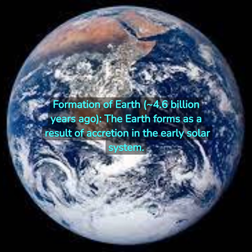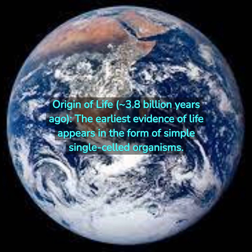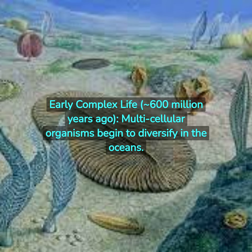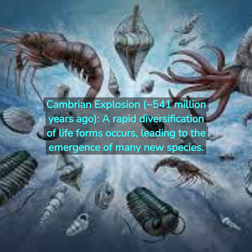Formation of Earth: 4.6 billion years ago, the Earth forms as a result of accretion in the early solar system. Origin of Life: 3.8 billion years ago, the earliest evidence of life appears in the form of simple single-celled organisms. Emergence of Photosynthesis: 3.5 billion years ago, photosynthetic bacteria evolve, producing oxygen and changing the atmosphere's composition. Early Complex Life: 600 million years ago, multicellular organisms begin to diversify in the oceans. Cambrian Explosion: 541 million years ago, a rapid diversification of life forms occurs, leading to the emergence of many new species.